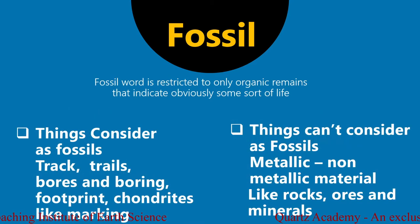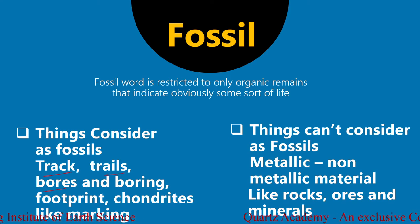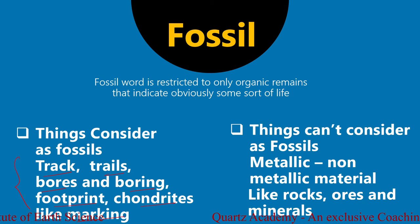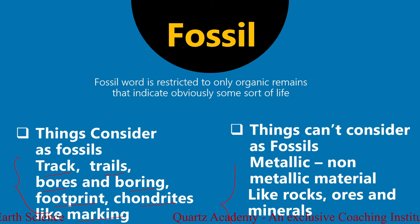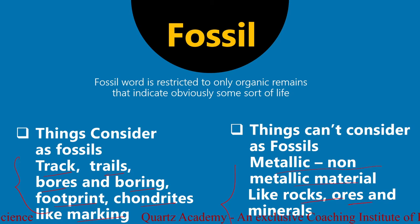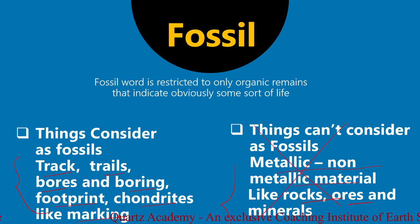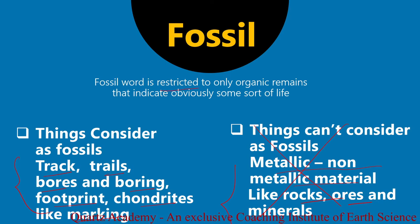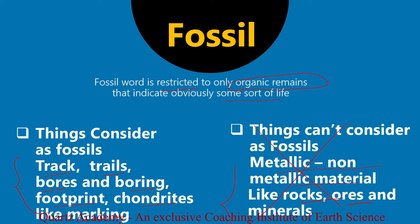These are some things which are considered as a fossil, like tracks, trails, bores, borings, footprints, and conduit-like markings. But there are some things which cannot be considered as a fossil, like metallic and non-metallic minerals, rocks, ore, or ore deposits. The fossil word is restricted to only organic remains that indicate obviously some sort of life.